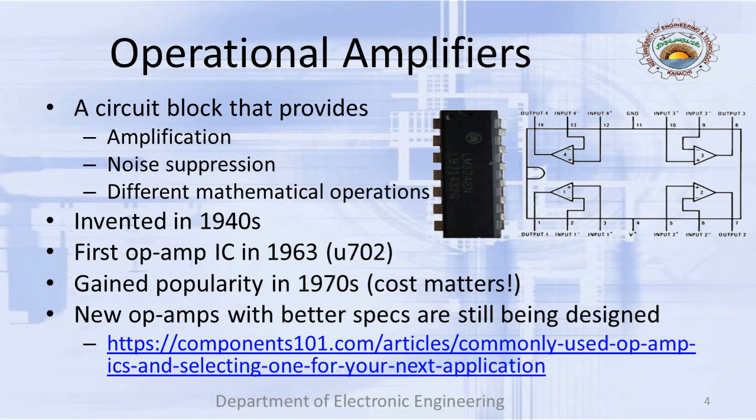What is an operational amplifier? It is basically a circuit block that provides you with amplification, noise suppression, and it can perform different mathematical operations. Noise is also a major issue with analog signals, and the operational amplifier is very good at suppressing that noise. The concept was presented in the 1940s, and the first operational amplifier IC was made in 1963 — the U702 by Bob Widlar.